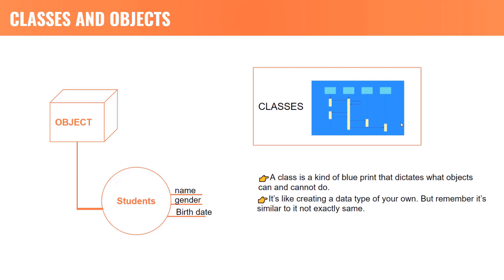Now, classes is like a data type of your own. Now, we have used a lot of data type, right? Integer, Float, String, List, Tuples. If you want to create your own data type like a student data type, you can do it using classes. But remember, it's similar to it, not exactly the same. Now, once you have created a class, you can create one or more objects through that class.